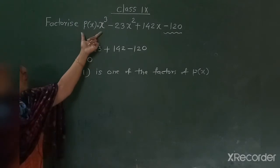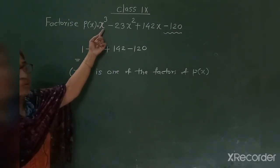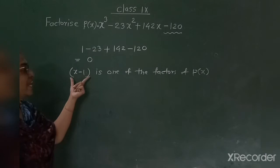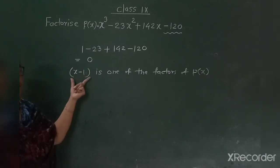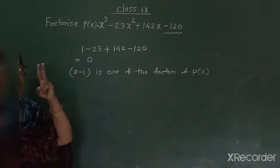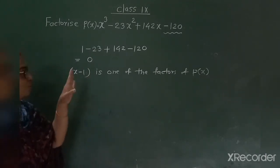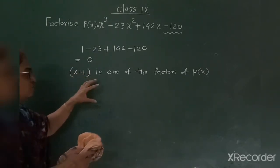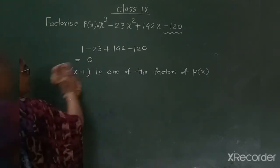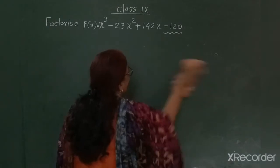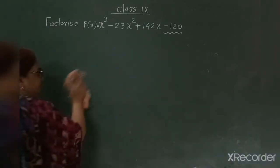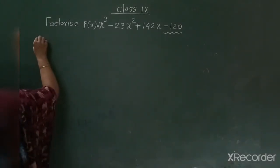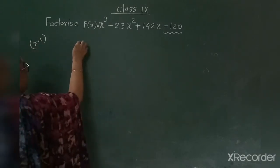This cubic polynomial has degree 3, so it will have 3 factors. We have found one factor so far — x minus 1. We need to find 2 more. Pause the video and write this down. So x minus 1 is one factor. Now I will write this on the side: x minus 1 is a factor.